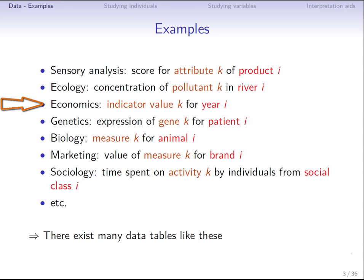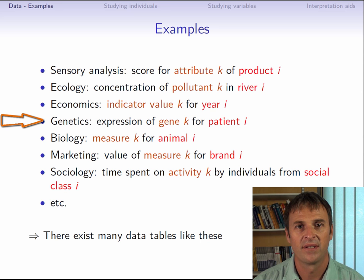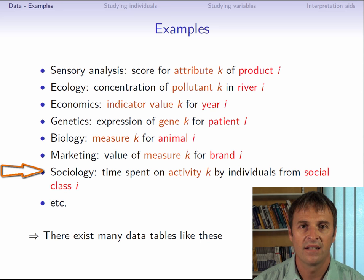Often in genetics, patients are represented in terms of their genes. This kind of data set can be large, since there are lots of genes. In marketing, we could have a set of brands and several measures of satisfaction. And in sociology, we could have different social classes and different activities, with the table entries being the average time spent by individuals of each social class at a given activity. Clearly, tables like these, with individuals in rows and variables in columns, are found across many fields.